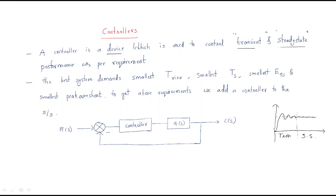Generally, the best system demands the smallest rise time. Rise time means the time to reach 50% of the final value — that is tr. And the smallest settling time, which is the time required for the output to settle within a plus or minus 5% or plus or minus 3% tolerance band.